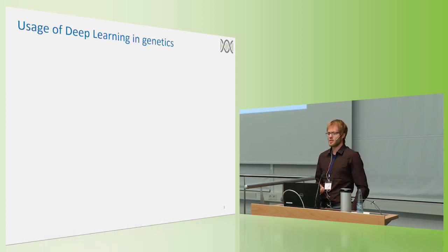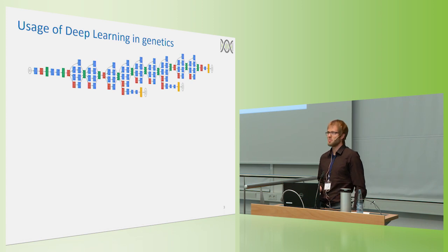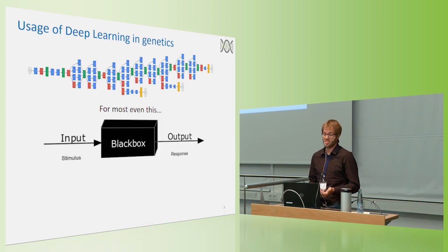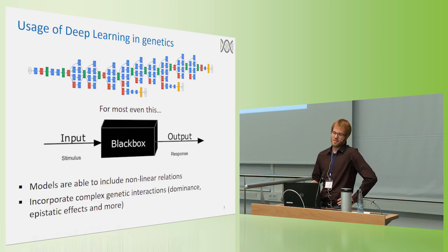And when we are looking at the deep learning methods, we often see methods that look like complex structures. So it's, for most of us, just a black box or black magic, as it was called previously.